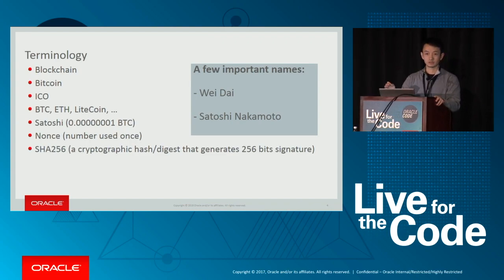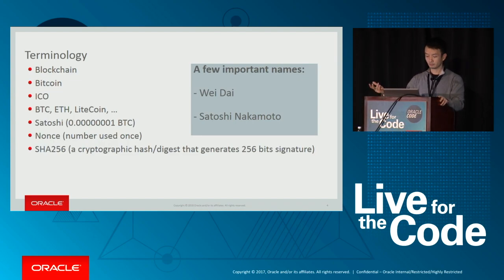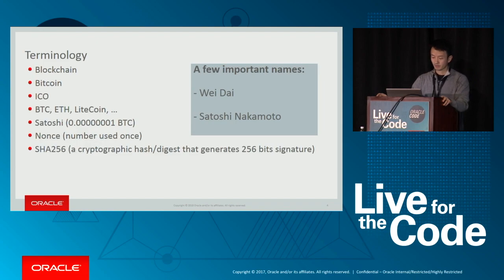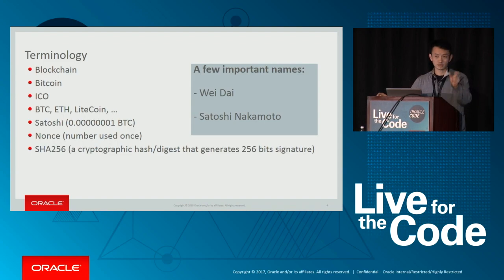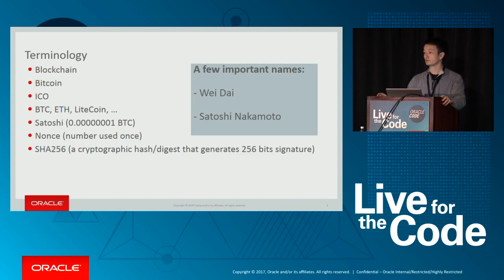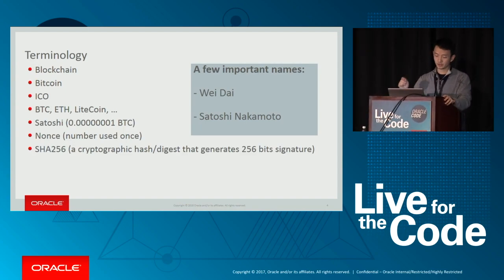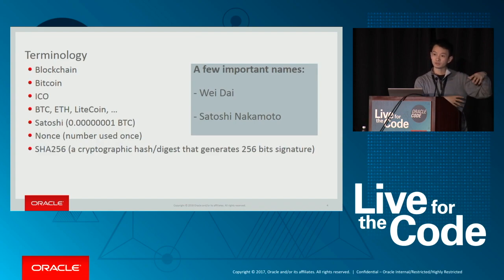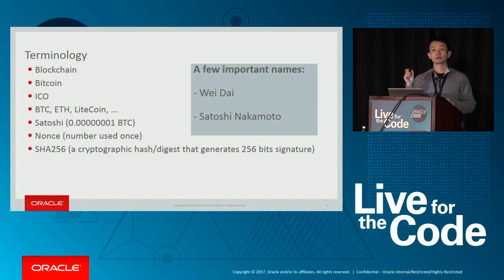In US dollars we have dollars, $20 bill, $100 bill, and also one cent. In Bitcoin, the smallest unit is not a Bitcoin — it's a so-called satoshi, which is a really tiny decimal. Nonce — number used once — is a critical concept. It's a number we need to find and attach to a block, so that when we run a certain hash on the block, the hashed result has a particular pattern.